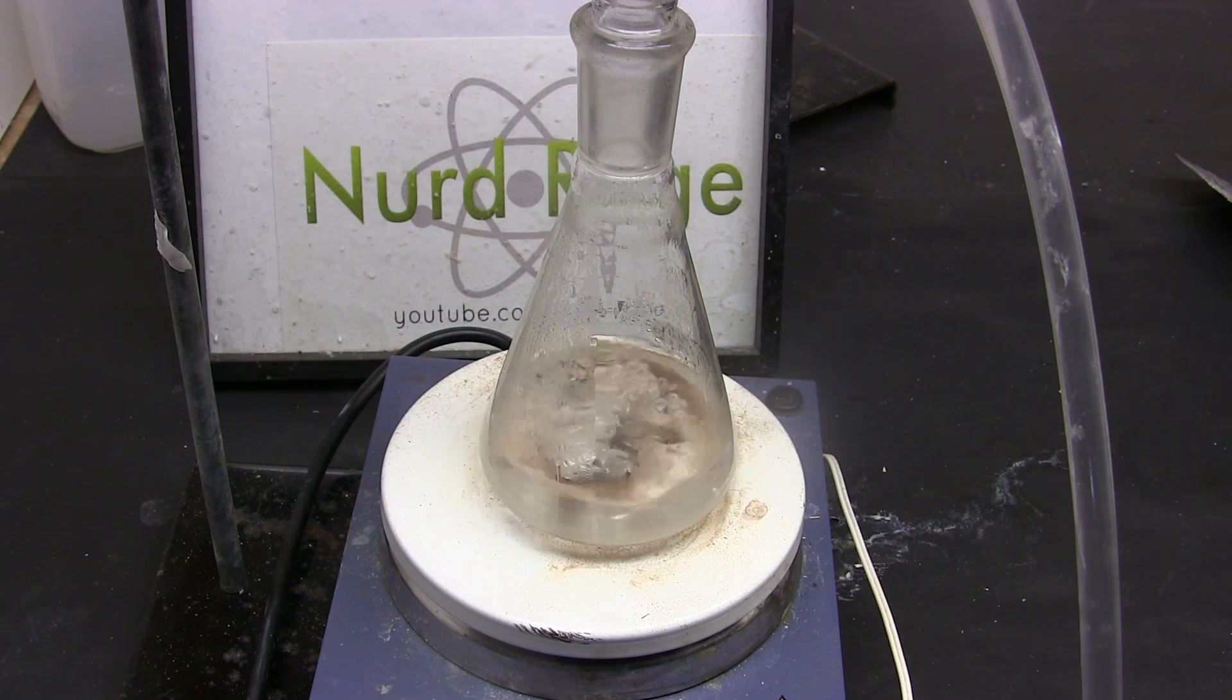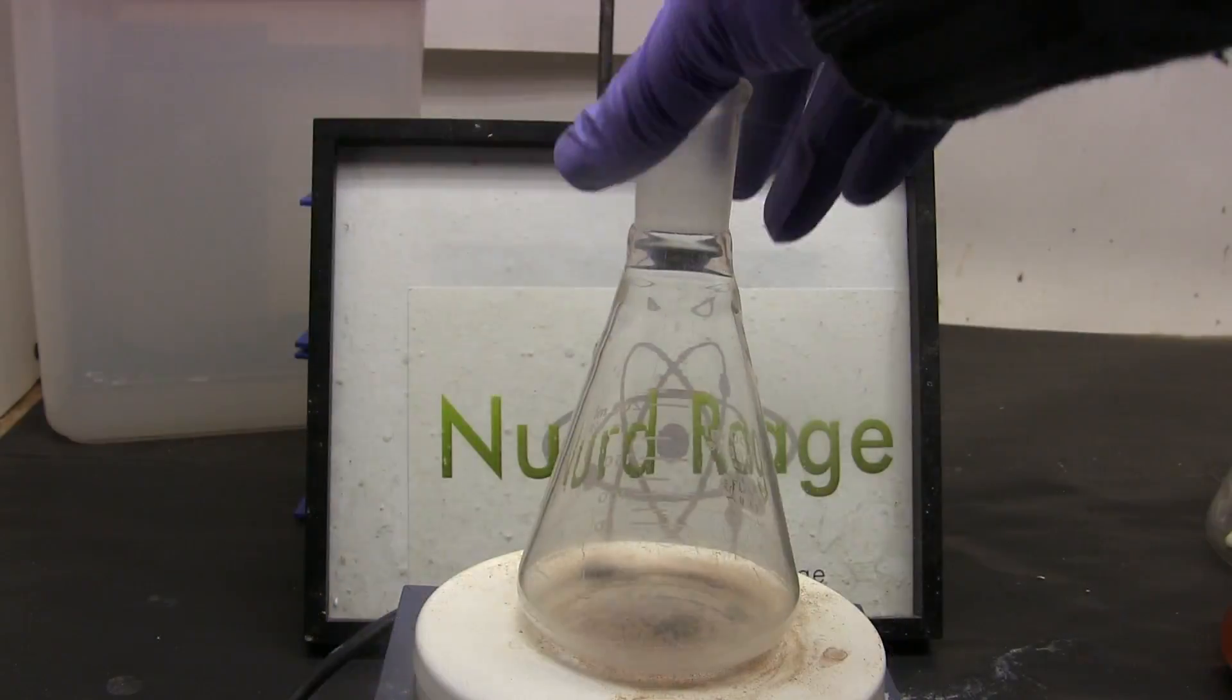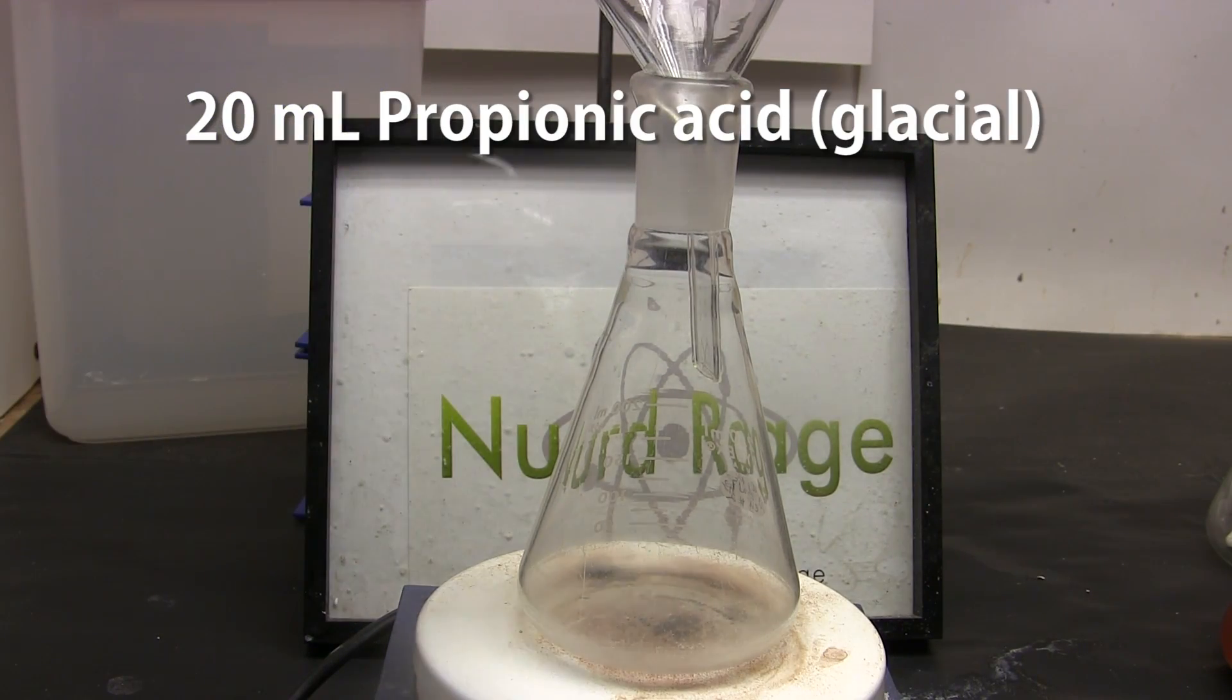Finally we make something that doesn't smell like death. First we start with an Erlenmeyer flask and add in 20 mL of propionic acid.